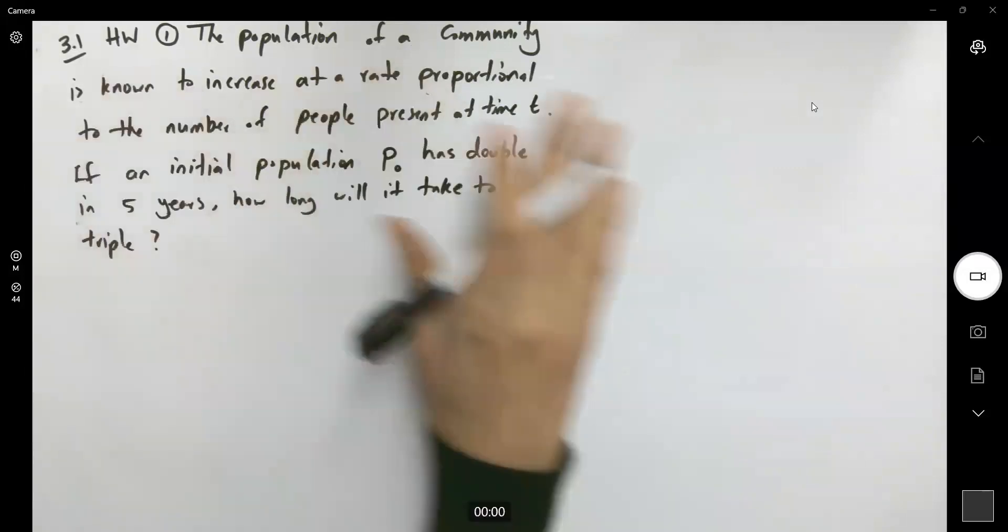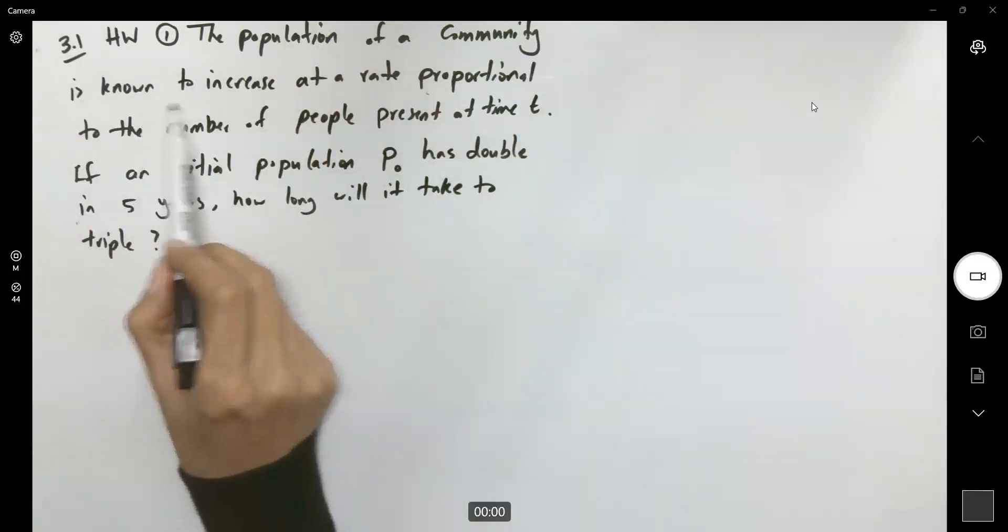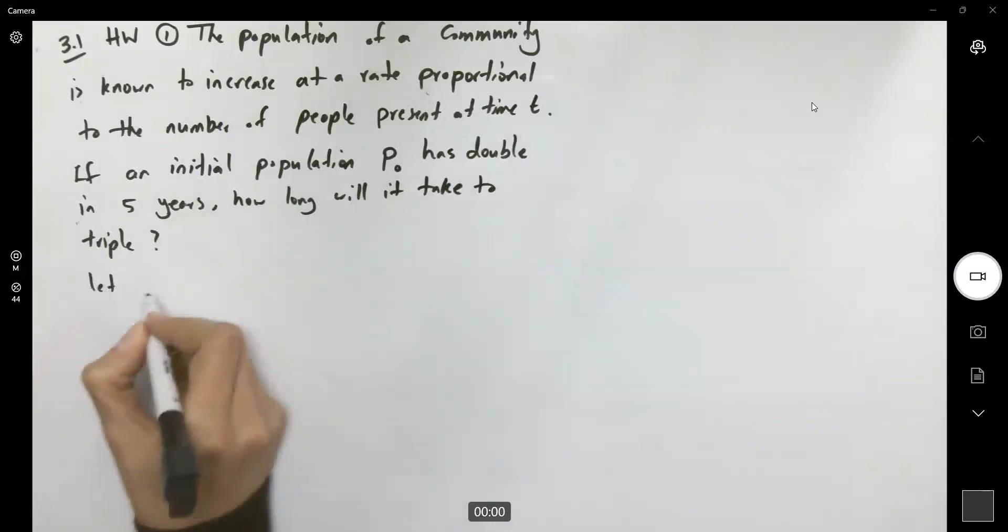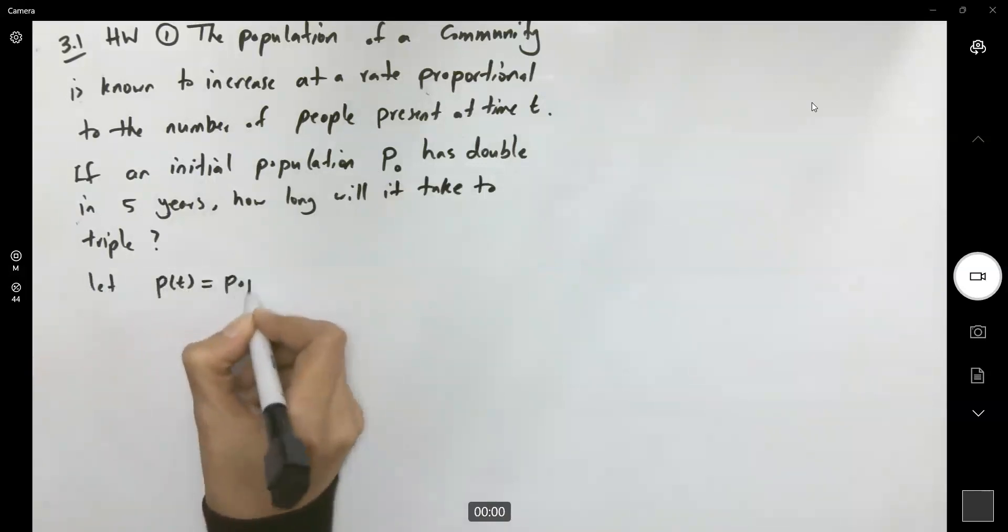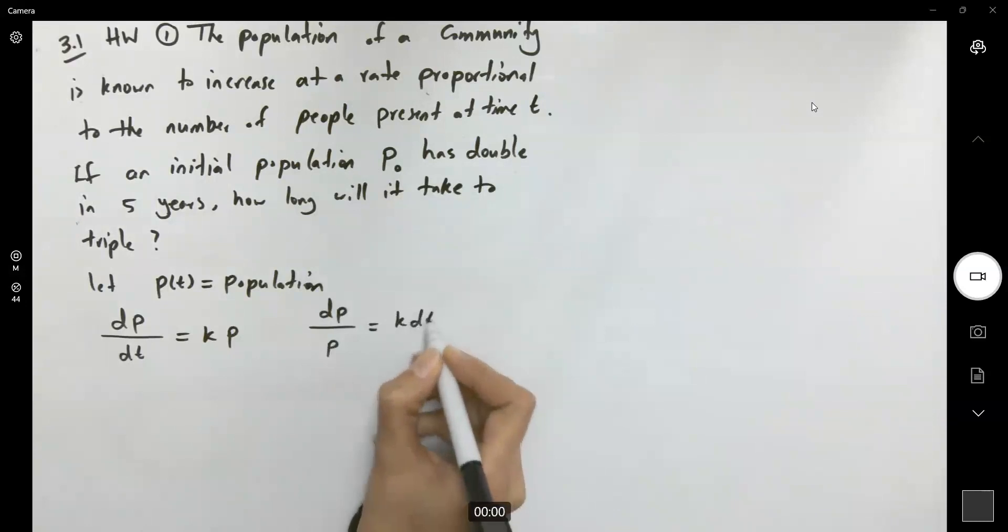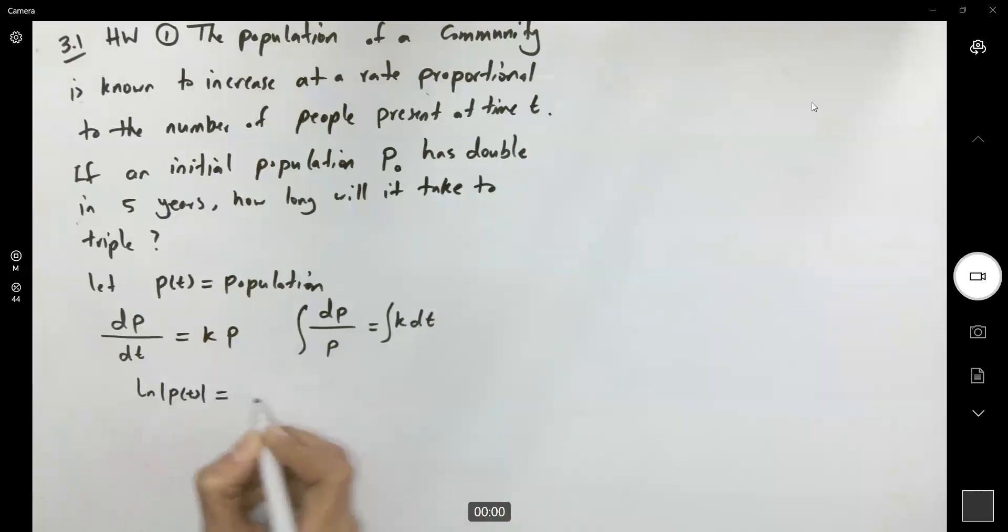First, let's look at the question. The rate of change is proportional to the number of people. Let p(t) represent the population. The rate of change with respect to time is proportional to the population itself, so dp/dt = kp. Writing this in separable form and integrating both sides, we get ln|p| = kt + c₁. Therefore, p(t) = Ce^(kt). This is the model we're dealing with.